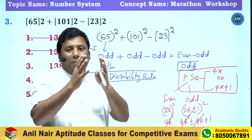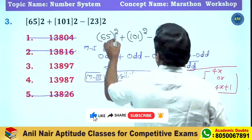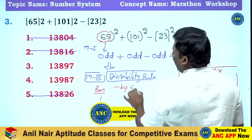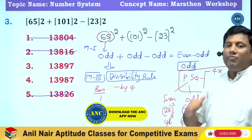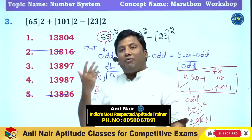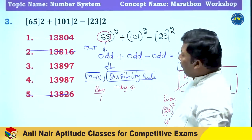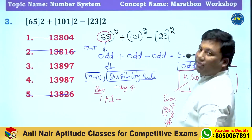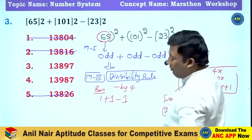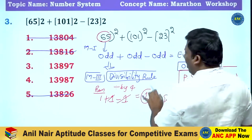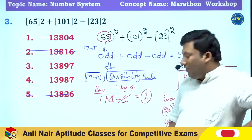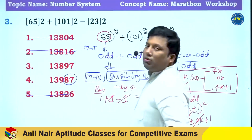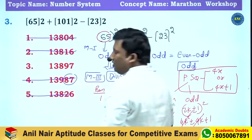So any perfect square when divided by 4 gives remainder 0 or 1. Now applying this: 65² → 4×16=64, remainder 1. 101² → 4×25=100, remainder 1. 23² → 4×5=20, remainder 3... wait — 23 squared is 529: 4×132=528, remainder 1. So the answer will give remainder 1 when divided by 4.